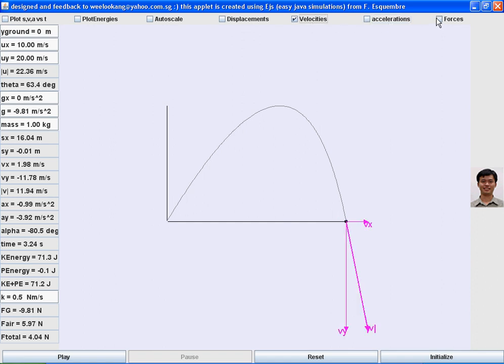For example, we can click on velocity and forces, and you can see that the air resistance is directly opposite in direction to the magnitude of the velocity.